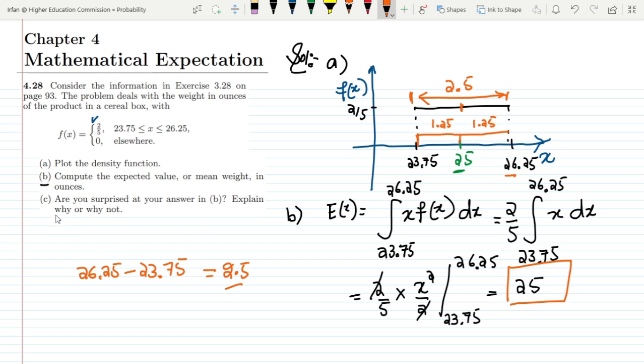Therefore in part C it is asking us that are you surprised at your answer in b explaining why or why not? We are not surprised because this is a symmetrical function and in symmetrical function mean basically lies at the middle of it.